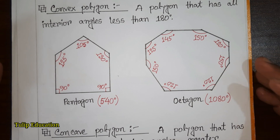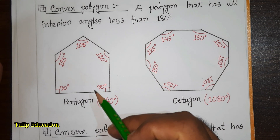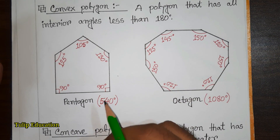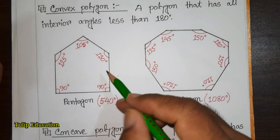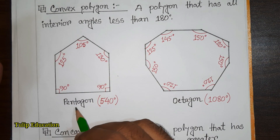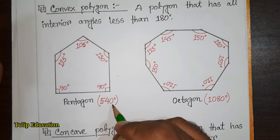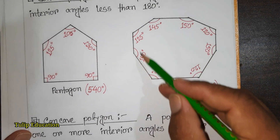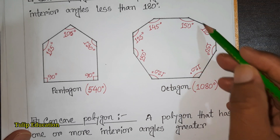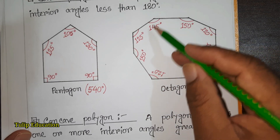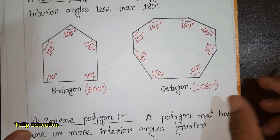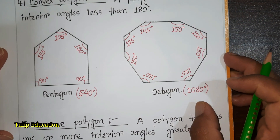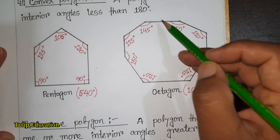In our very next tutorial we will discuss how to calculate the summation of interior angles of every polygon — that means we can easily calculate how the total interior angles of a pentagon is 540 degrees and how the summation of every interior angle of an octagon is 1080 degrees.